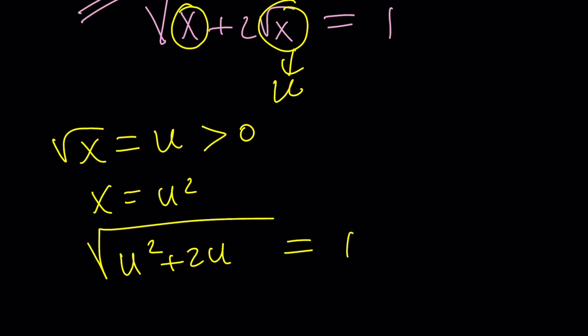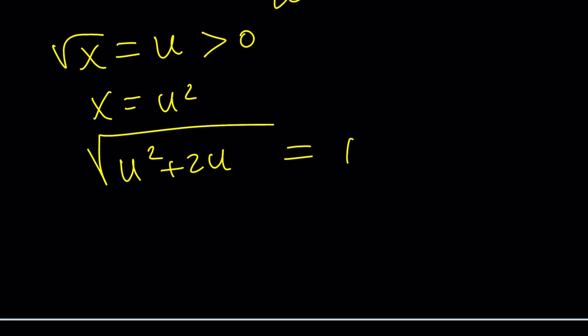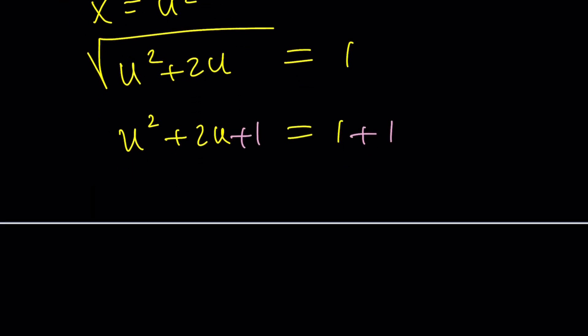Now, you can definitely go ahead and square both sides at this point. I mean, we have to square at some point, right? And when you do, you're going to get something like this. And if you add 1 to both sides, you're going to get a perfect square on the left-hand side. This method is called completing the square, by the way. You can take the square roots. That's going to be plus minus root 2. And from here, you get two solutions.